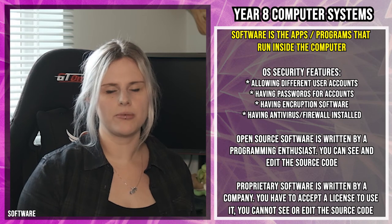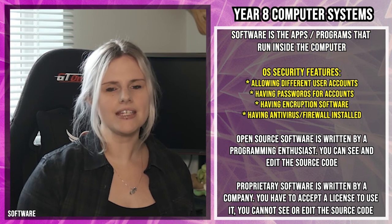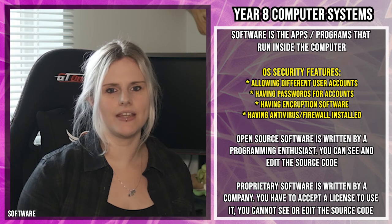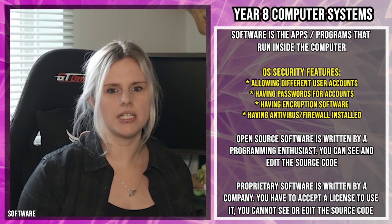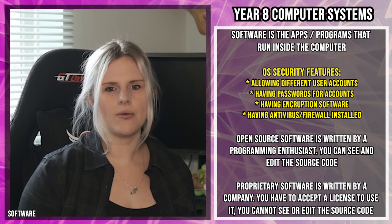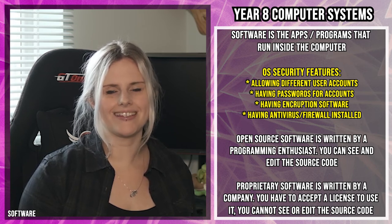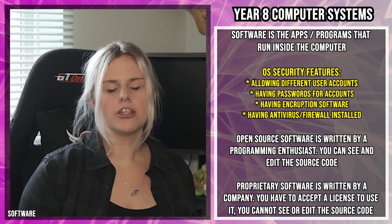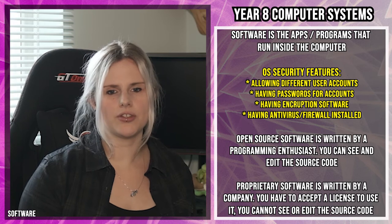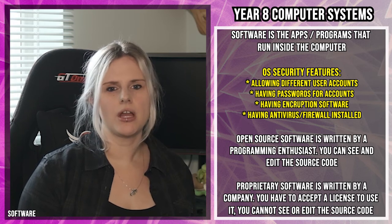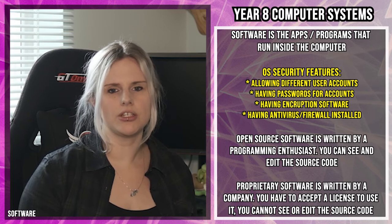Software is all the apps and programs that run on the computer system. In Year 7 you learned about operating systems and their six key features. For this topic you need to know how operating systems keep computers secure — there are four security features. First, operating systems allow different user accounts, so you can have your own account with your own settings, files and programs, and others can't see your files. Second, operating systems allow you to set passwords — a unique username and password stops other people from accessing your account and stored files.